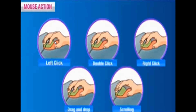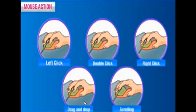The five mouse actions are: left click, double click, right click, drag and drop, and scrolling. Left click means pressing the left button once to select any item. Double click is used to open any file or folder. Right click is used to open any file or folder, or to open a pop-up menu.